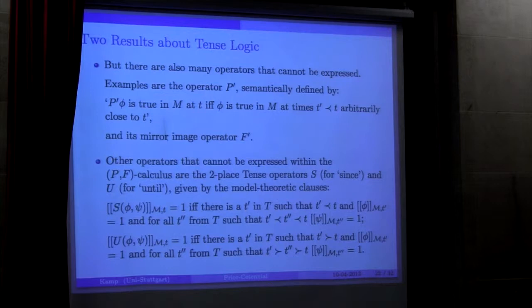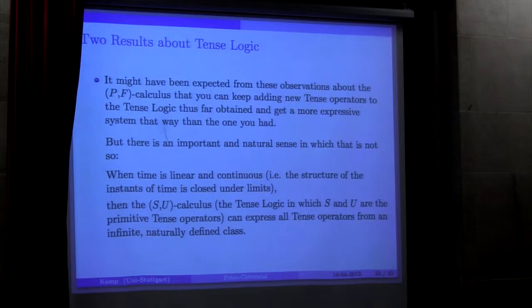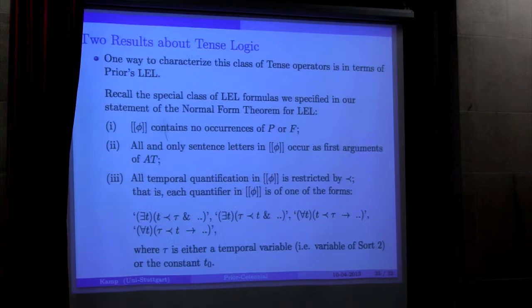So the claim is that with an axiom system of this kind, it's possible—and the rules of modus ponens, and from phi you can infer that H phi and from phi you can infer G phi ('it will always be the case' and 'it was always the case'), and the usual machinery that you also need for predicate logic—you can actually derive the normal form, a normal form for each of the formulas of the PF calculus, and thereby show purely proof-theoretically that there is a sense, once you accept this embedding of the PF calculus in this larger calculus, of each formula of tense logic of the PF calculus kind of carrying within itself its own truth conditions as spelled out in these normal forms.